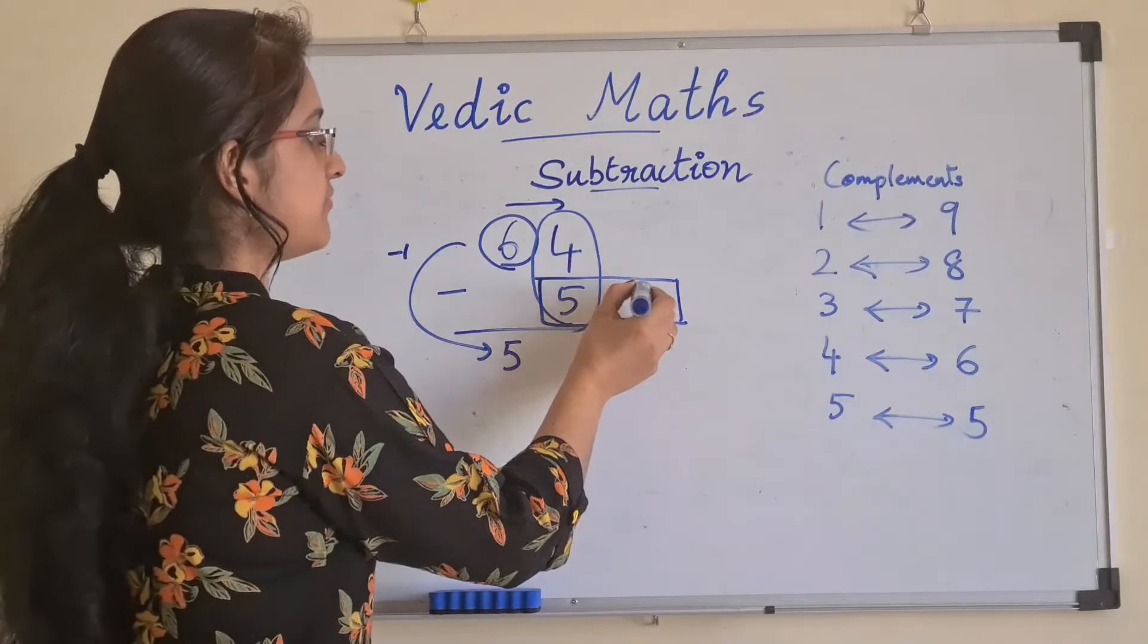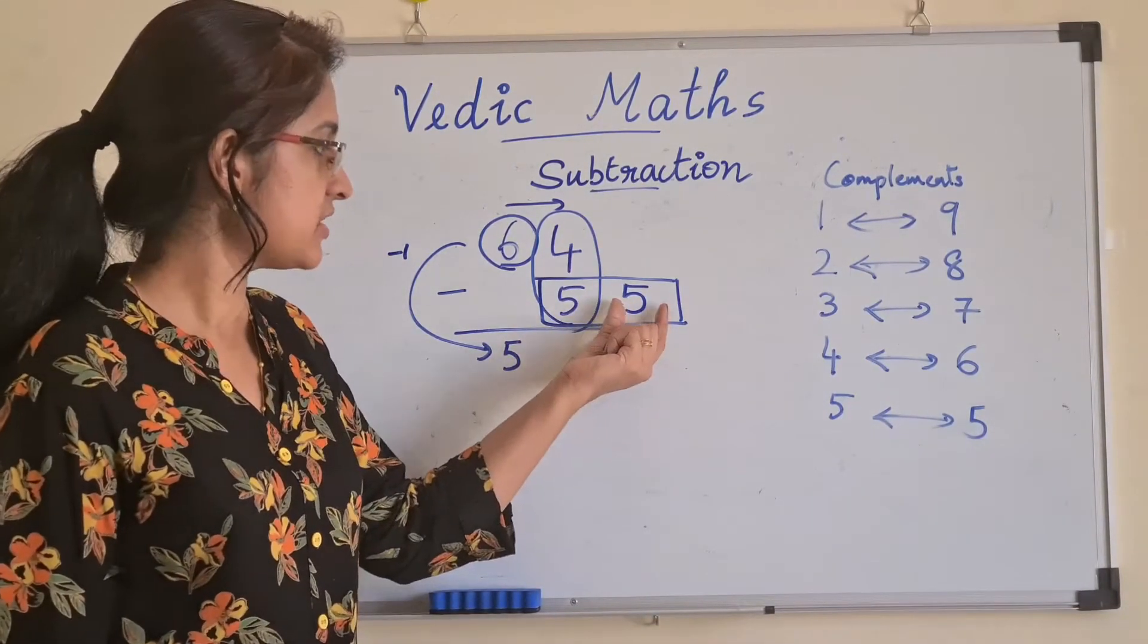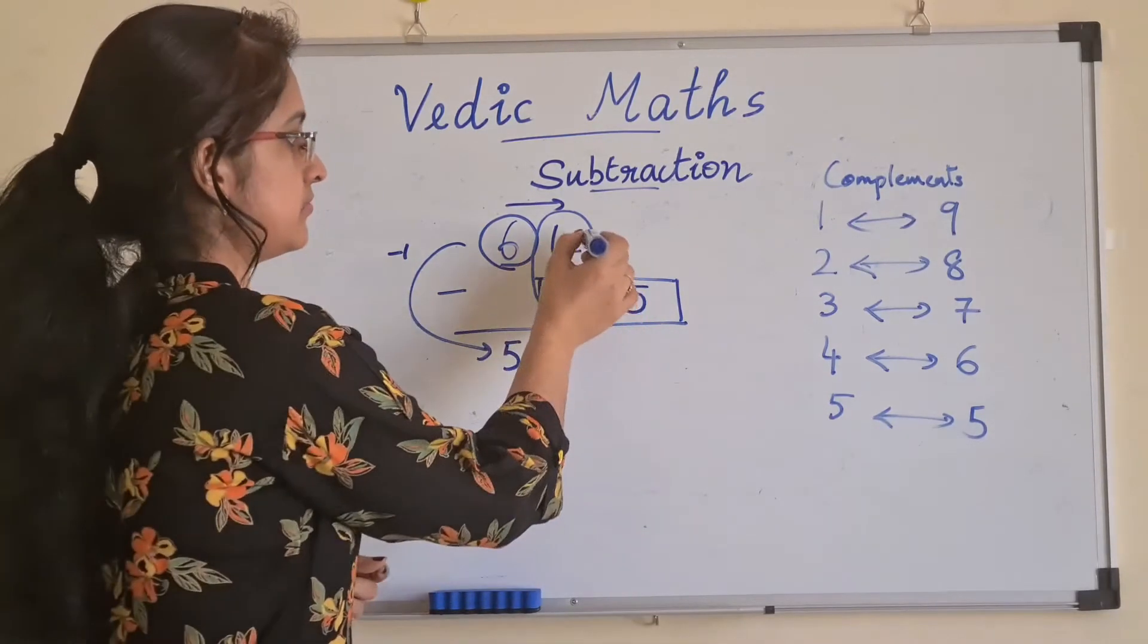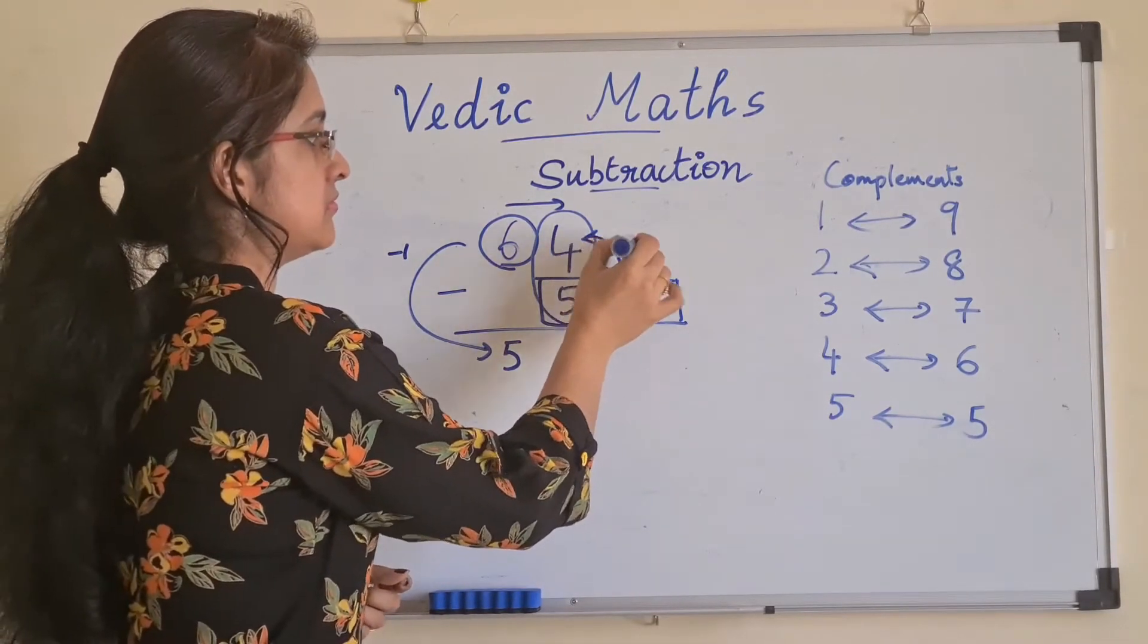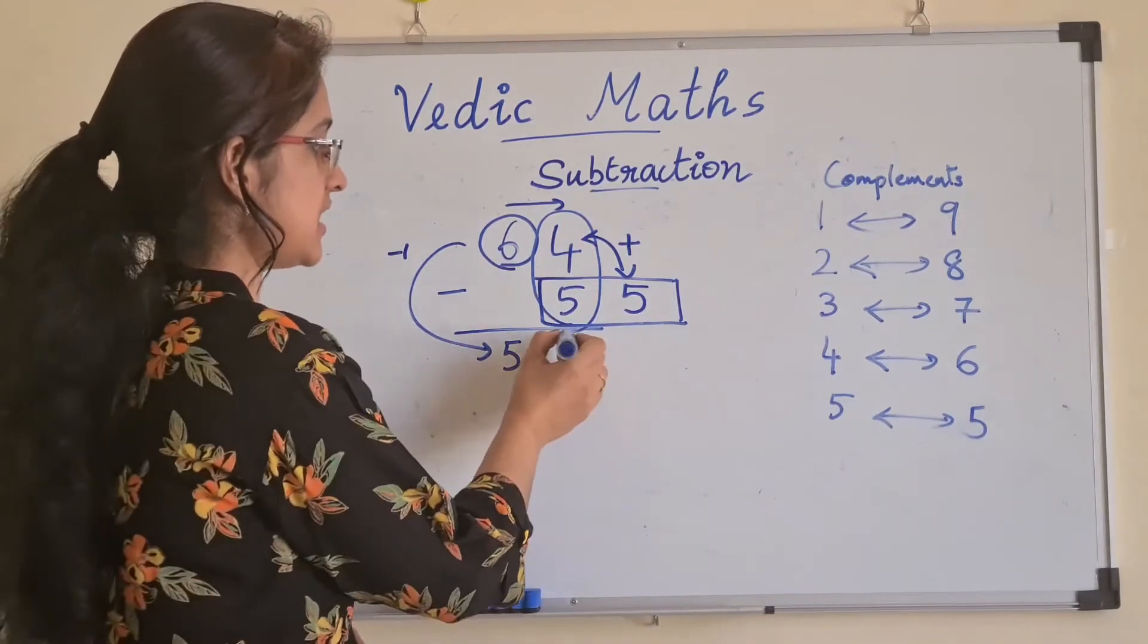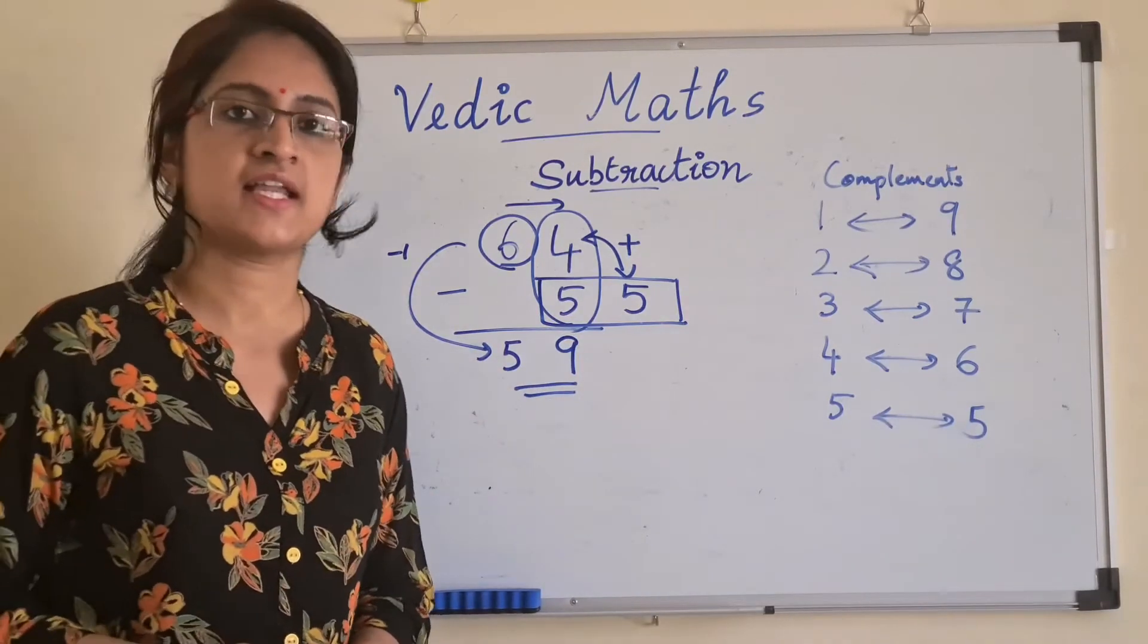You will write 5 here. And this 5, we are going to add with 4. 5 plus 4 is 9. This is our final answer.